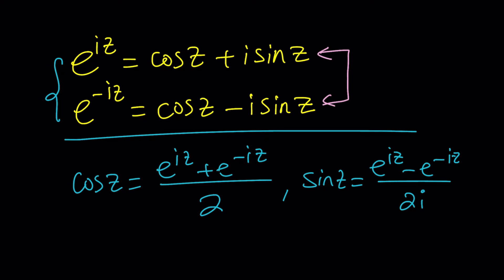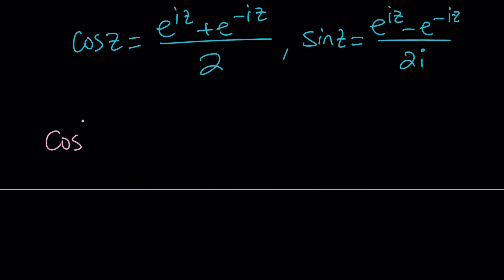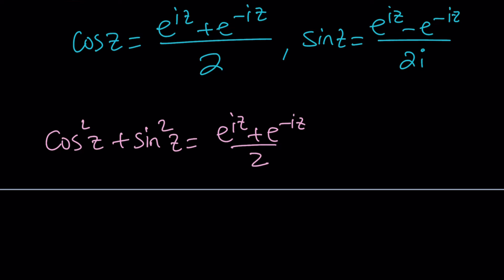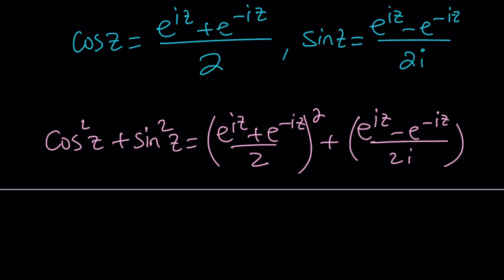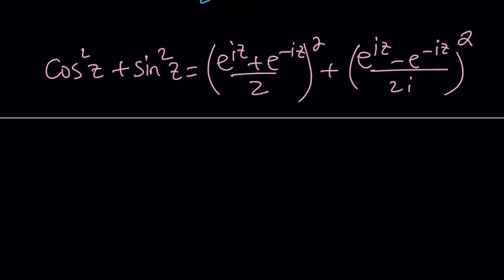So why not just plug them into our expression? We have cosine squared z plus sine squared z, so we take the cosine and square it, and take the sine and square it. When you expand the cosine squared — which is like (a + b)² — you get e^(2iz) + e^(−2iz) from the squares, plus the 2ab term. Notice that when you multiply e^(iz) and e^(−iz), you get e to the power 0, which is 1, so you just get 2.